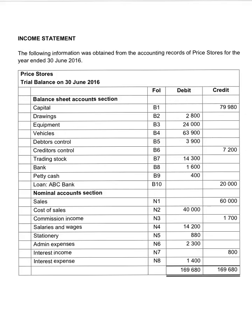Good morning. We will pay attention to the income statement today. The trial balance is given on the 30th of June 2016. All the accounts in the balance sheet section will only be used when we complete the balance sheet or the notes that will accompany the balance sheet. The nominal account section will be used to complete the income statement, because in the income statement we want to show all the income and expenses.